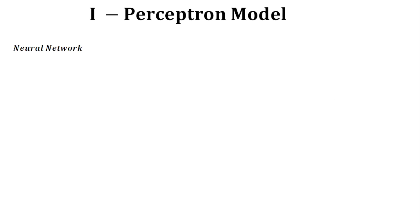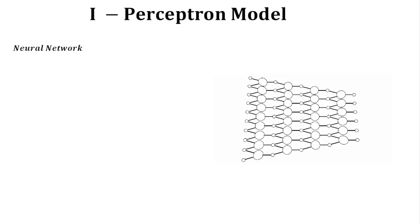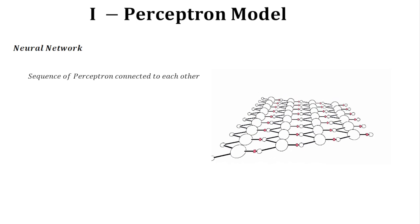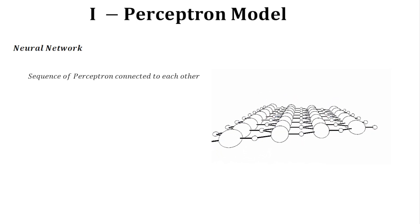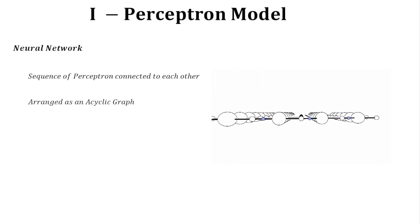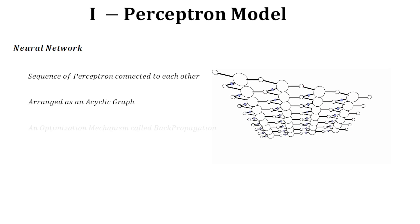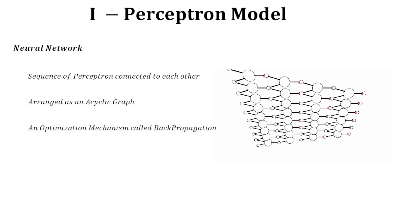From here, we can have a look at neural networks. When perceptrons are combined together, they form a neural network that has a stronger power of classification. They must be arranged in an acyclic graph to avoid recurrent connections. Otherwise, the principle is almost the same.